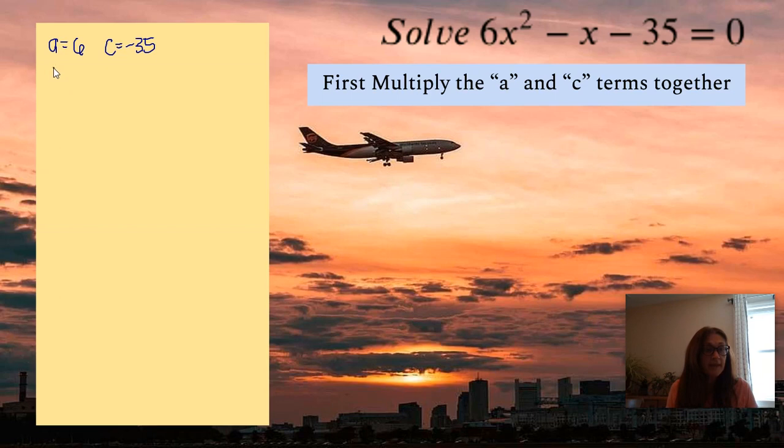So now when we multiply them together, 6 times by negative 35, I'm going to get negative 210. And now I'm looking here, I know that the signs are different again, and the larger number is also going to be negative.